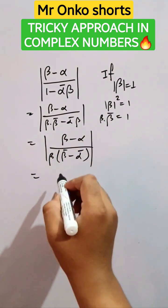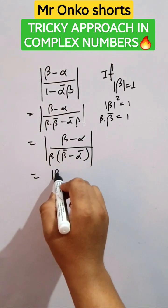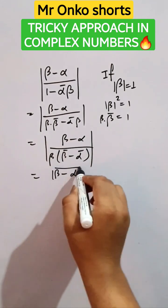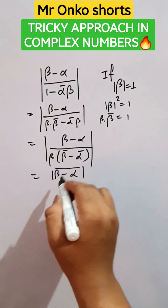We know that mod beta minus alpha can be written as mod beta minus alpha bar divided by mod beta into mod of beta bar minus alpha bar.